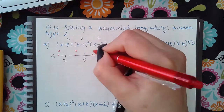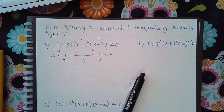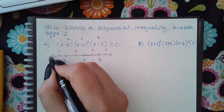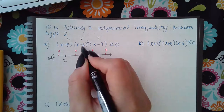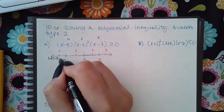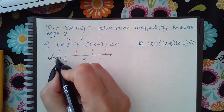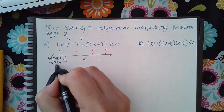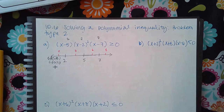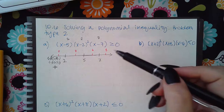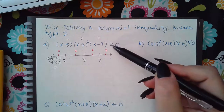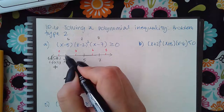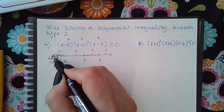When I test 0, I get a negative times a negative squared times a negative. The negative squared is always positive, and a negative times a positive times a negative ends up being positive. Positives are greater than or equal to 0, so this interval will be included in my answer — I'll shade it in.